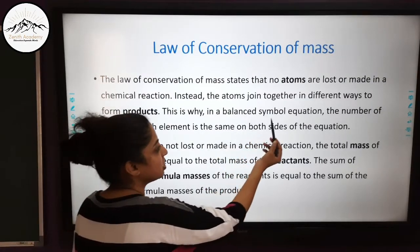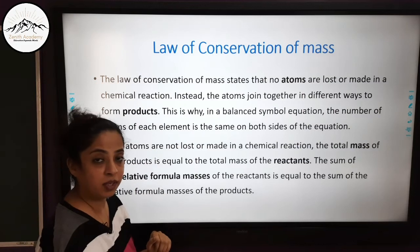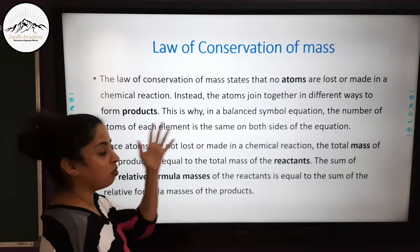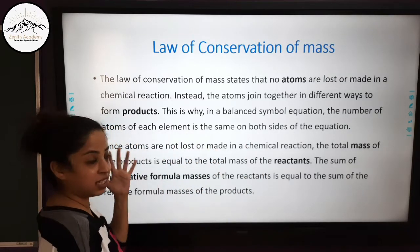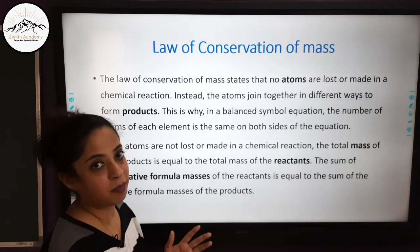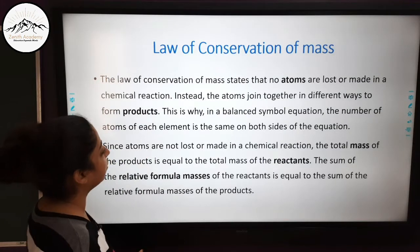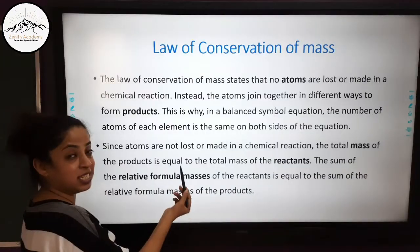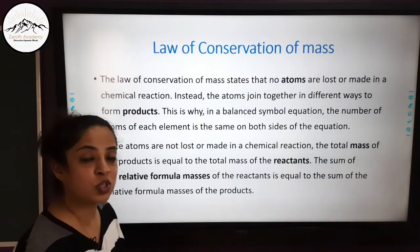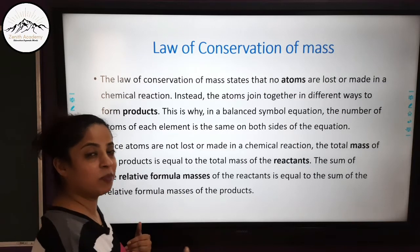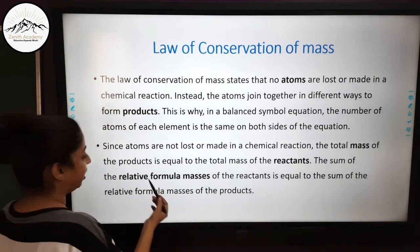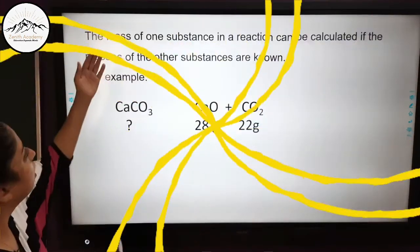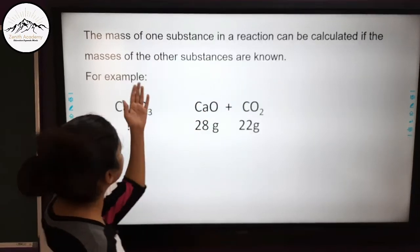This is why in a balanced symbol equation, the number of atoms of each element is the same on both sides of the equation. On the reactant side and product side, the number of atoms of the same element remains the same. Since the atoms are not lost or made in a chemical reaction, the total mass of the products is equal to the total mass of the reactants. The sum of the relative formula masses of the reactants equals the sum of the relative formula masses of the products. The mass of one substance in a reaction can be calculated if the masses of the other substances are known.